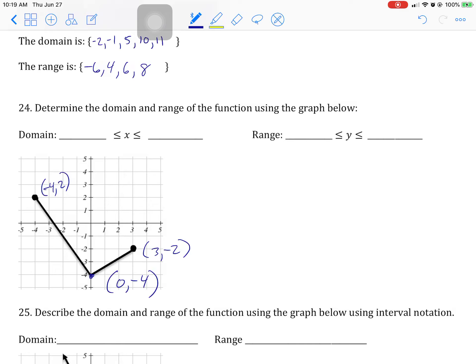Because the domain is how far this way and how far this way you go for the X's. So we went all the way to negative 4 for the domain. And we went all the way to positive 3 for the X's on the X-axis.